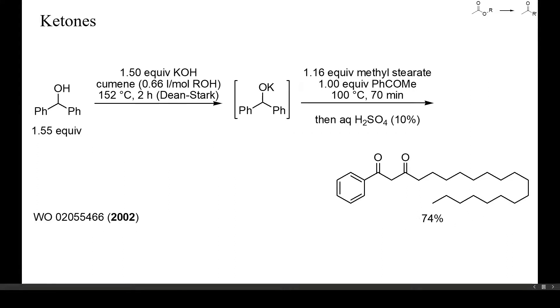Strongly basic alkoxides can sometimes be prepared from alkali hydroxides and high boiling alcohols by azeotropic removal of water, as in this example. Here the potassium salt of diphenylmethanol was generated this way and then used for the condensation of acetophenone with methyl stearate. A high yield of mixed diketone was obtained without substantial self-condensation of acetophenone or the ester.